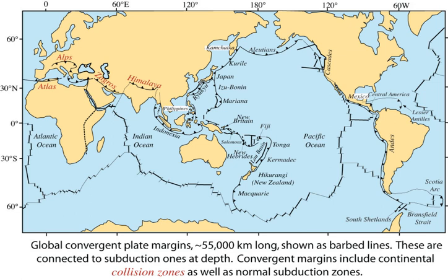Oceanic subduction zones dive down into the mantle beneath 55,000 km of convergent plate margins, almost equal to the cumulative 60,000 km of mid-ocean ridges. Subduction zones burrow deeply but are imperfectly camouflaged, and geophysics and geochemistry can be used to study them. Not surprisingly, the shallowest portions of subduction zones are known best.